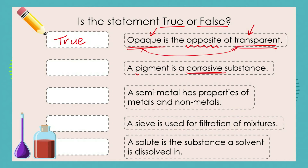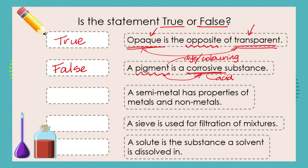Next statement: 'A pigment is a corrosive substance.' We learned about pigments when looking at separating mixtures using chromatography. A pigment is a dye or coloring substance — a very strong acid or base is a corrosive substance — so this statement is definitely false. Next: 'A semi-metal has properties of both metals and non-metals.' I can hear you calling that one — you're saying it's just too easy — and yes, that is true.